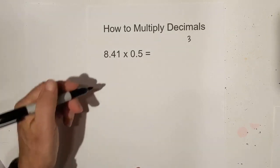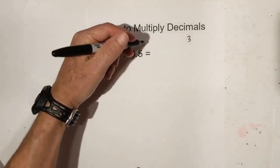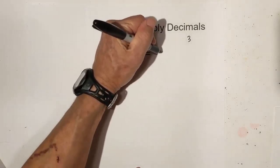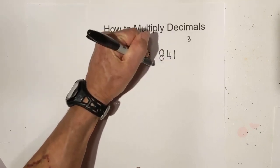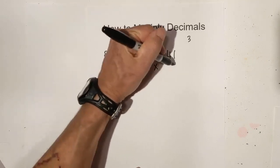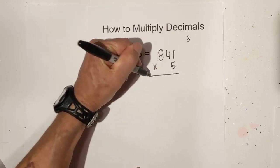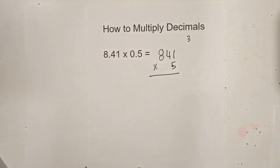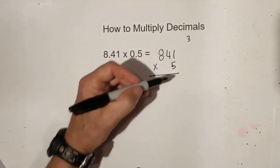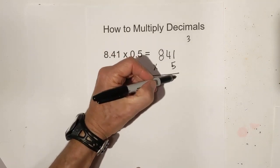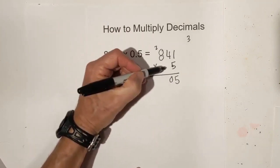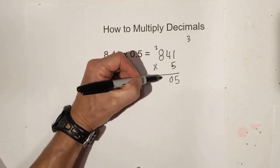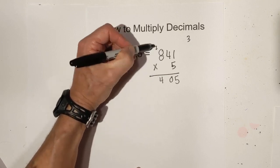Next, step two, you just multiply as if there are no decimals. So it will be 841 times 5. Five times 1 is 5, that's 20, carry the 2, that's 40 plus the 2.